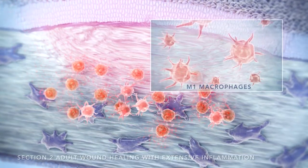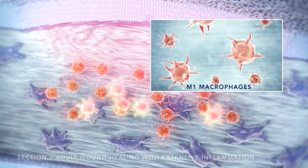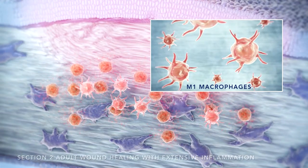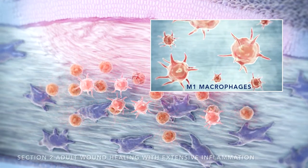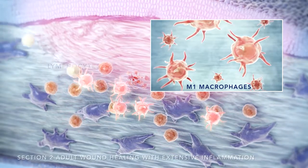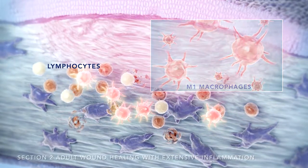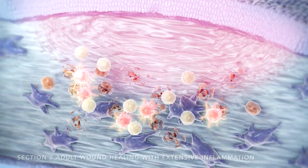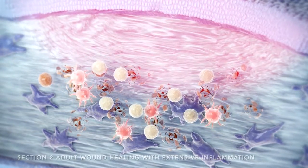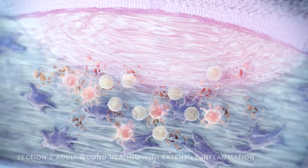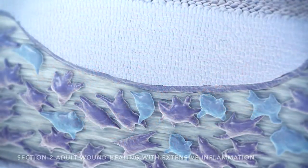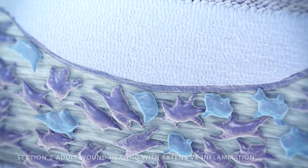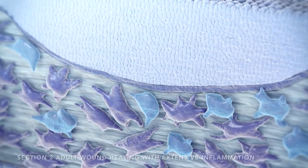With increased inflammation, macrophages cannot transition to the M2-type and stay as M1-type macrophages. M1-type macrophages then trigger recruitment of lymphocytes to the wound. When the wound is infiltrated by an overabundance of inflammatory cells — both neutrophils and lymphocytes — there is excessive fibroblast proliferation, excessive collagen production, and excessive fibrosis.